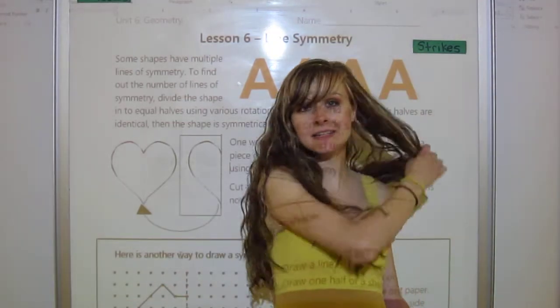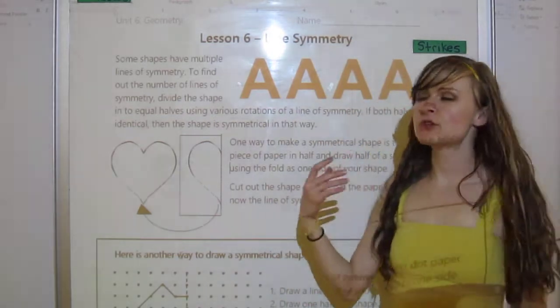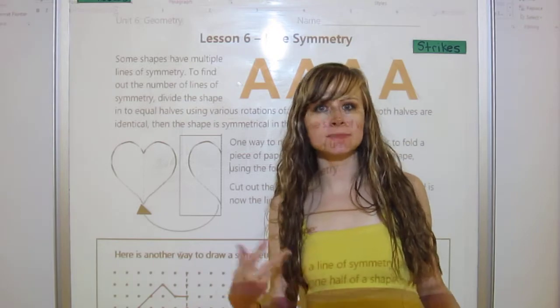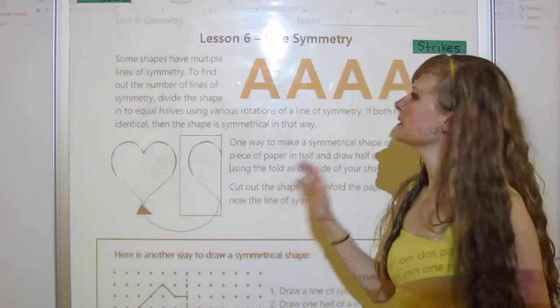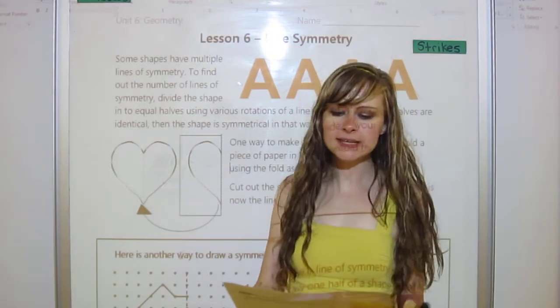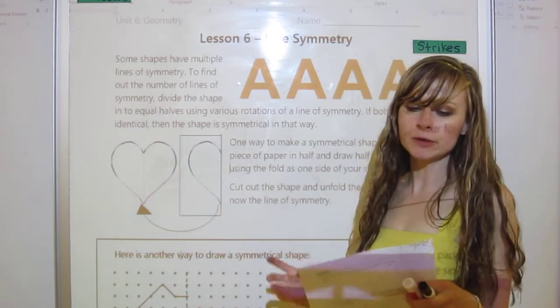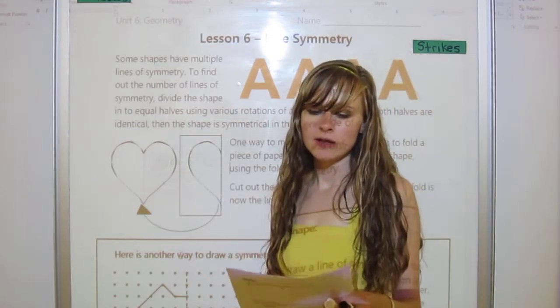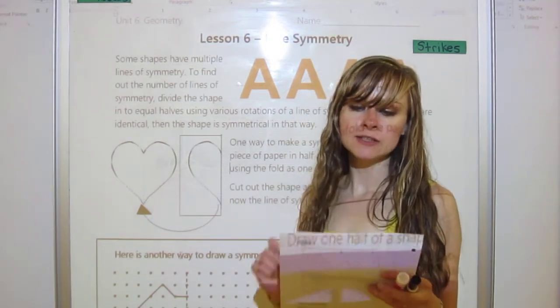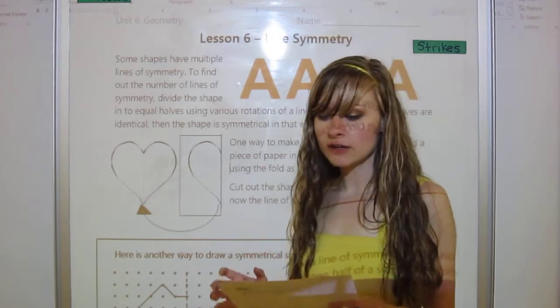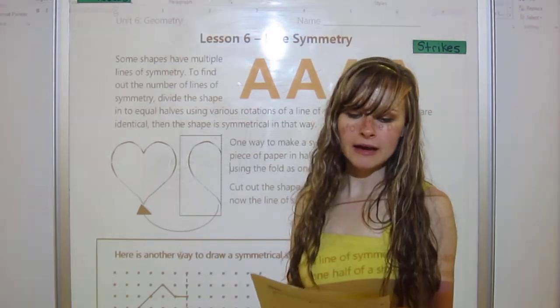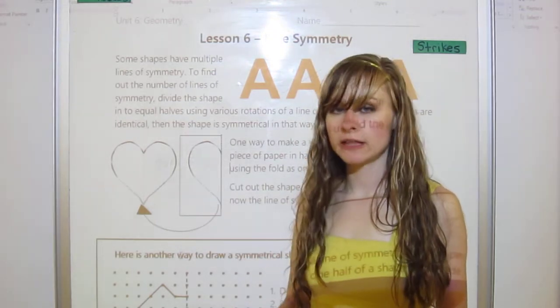Hello, this is the lesson on line symmetry. You learned about symmetry in the last lesson and now we're going to look more at the lines of the symmetrical shapes. So here's just some little information and tidbits before we get started. Some shapes have multiple lines of symmetry. We kind of talked about that before. But here's a reminder. To find out the number of lines of symmetry, divide the shape into equal halves using various rotations of a line of symmetry. If both halves are identical, then the shape is symmetrical in that way.